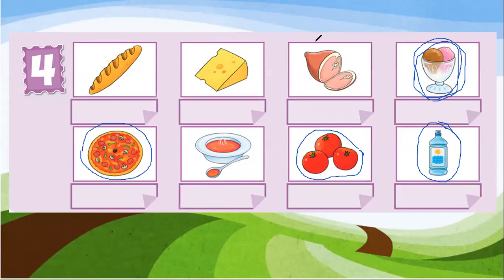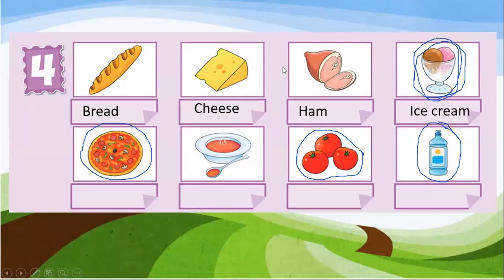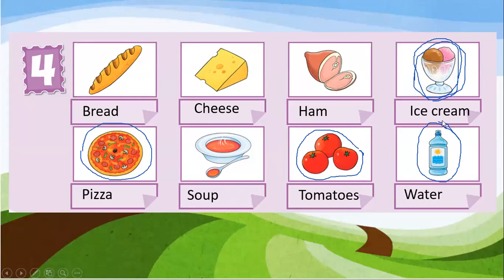Now we are going to check the correct writing for these foods and drinks. Vamos a ir chequeando la escritura de estas palabras. Bread — se escribe bread, pero la pronunciación es bread. Cheese — con doble E, se pronuncia cheese. Ham — se escribe con H, se pronuncia ham. Ice cream — tal como la mencionan siempre. Pizza — it's the same word as in Spanish. Soup — la escritura se escribe soap. Tomatoes — que son los tomates. And the last one is water — la botellita con agua.